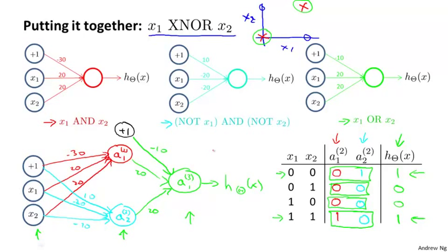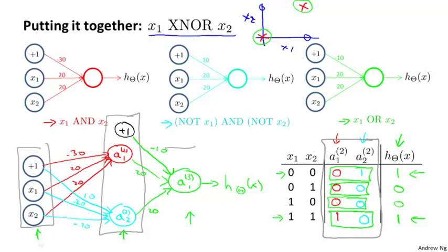And the more general intuition is that in the input layer, we just had our raw inputs. Then we had our hidden layer, which computed some slightly more complex functions of the inputs. And then by adding yet another layer, we end up with an even more complex nonlinear function. And this is the sort of intuition about why neural networks can compute pretty complicated functions.